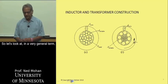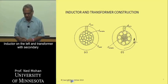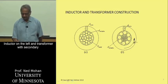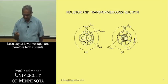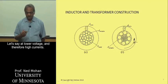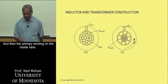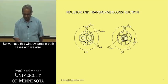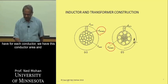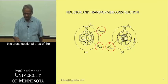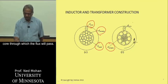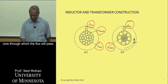In very general terms, let's look at an inductor and a transformer. The inductor is on the left, and a transformer with secondary windings on the outside at lower voltage and therefore high currents, and the primary winding on the inside. We have a window area in both cases, and for each conductor, we have the conductor area and the cross-sectional area of the core through which the flux will pass.